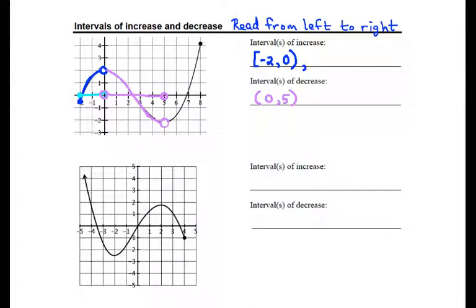After that, we are increasing one more time. And it looks like because we have an endpoint here, we stop. This function ends on an increase right here at x equals 8. So this last interval, we can go ahead and use a closed bracket there. I'm going to put this under increase. This goes from 5 up to 8.